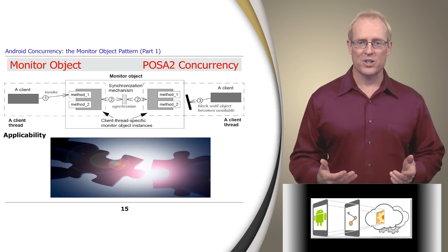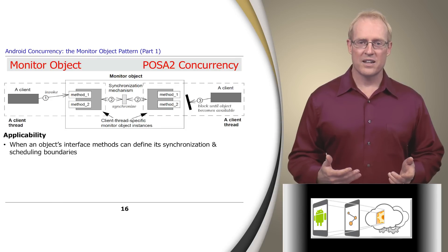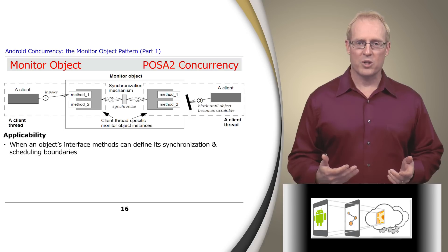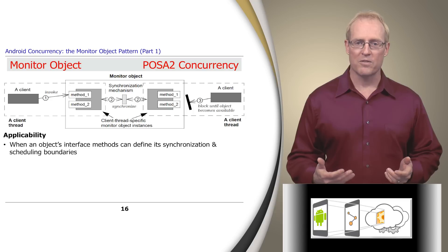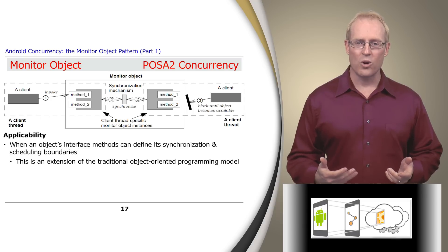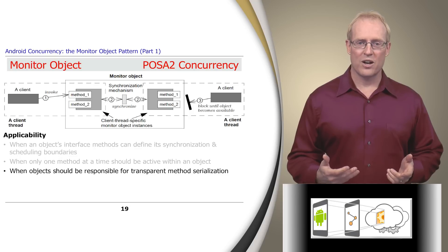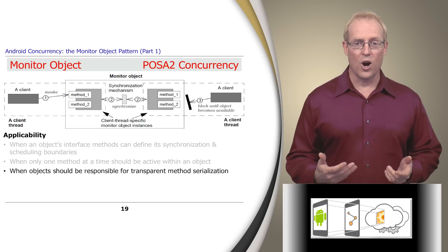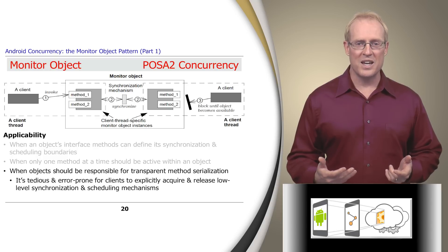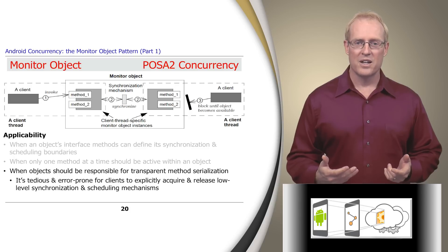This pattern is applicable under several conditions. It's often the case that an object's interface methods can define its scheduling and synchronization boundaries. To separate concerns and protect object state from uncontrolled changes, object-oriented programmers are accustomed to accessing objects only through their interface methods. It's straightforward to extend this OO programming model to protect an object's data from uncontrolled concurrent changes. Concurrent software is often easier to program when only one method at a time is active within an object, and when clients aren't responsible for serializing method execution, since it's tedious and error-prone to explicitly acquire and release low-level synchronization mechanisms such as locks and condition variables.